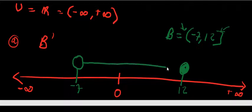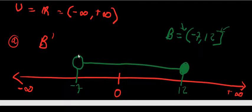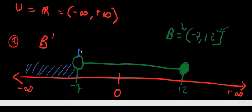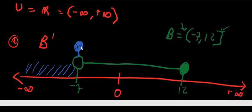Since this is one set we connect the two numbers to indicate that this is set B. Now the question asks us to find B complement, meaning we look for members which are not in B. Negative 7 is not in set B — it uses an open bracket — so negative 7 is in B complement.